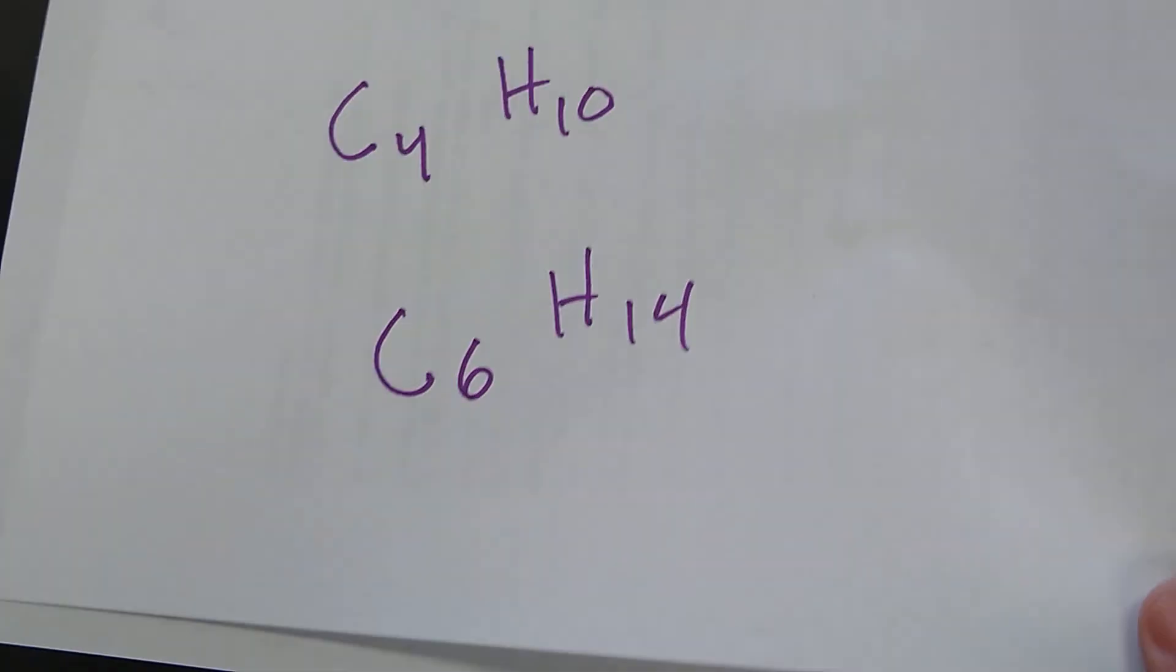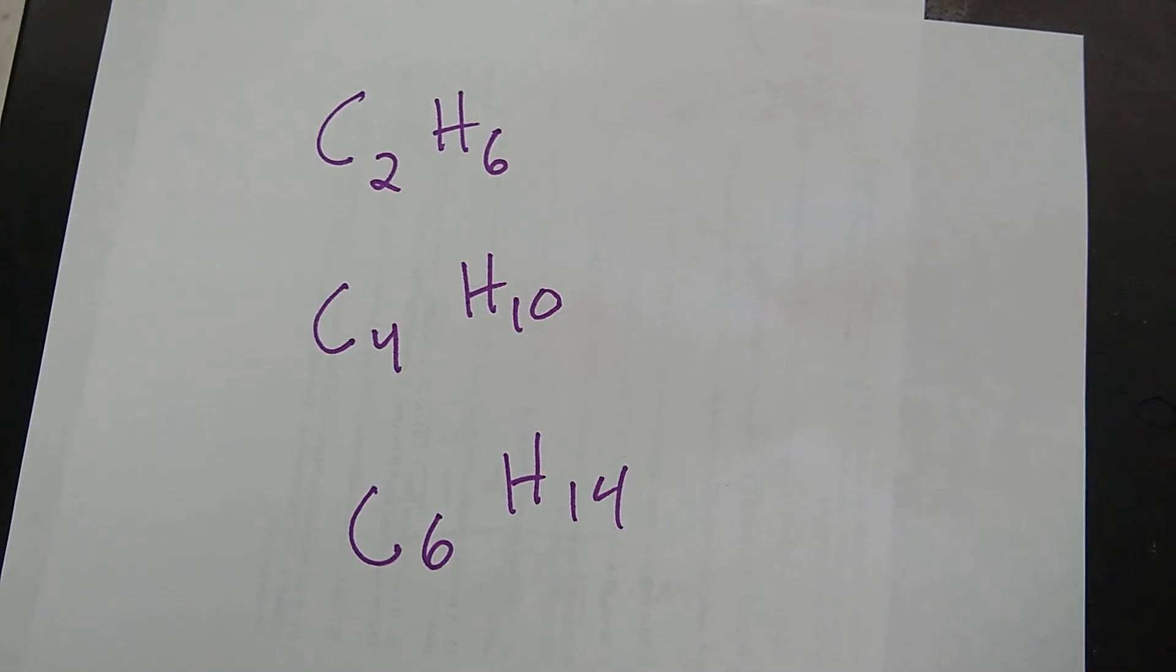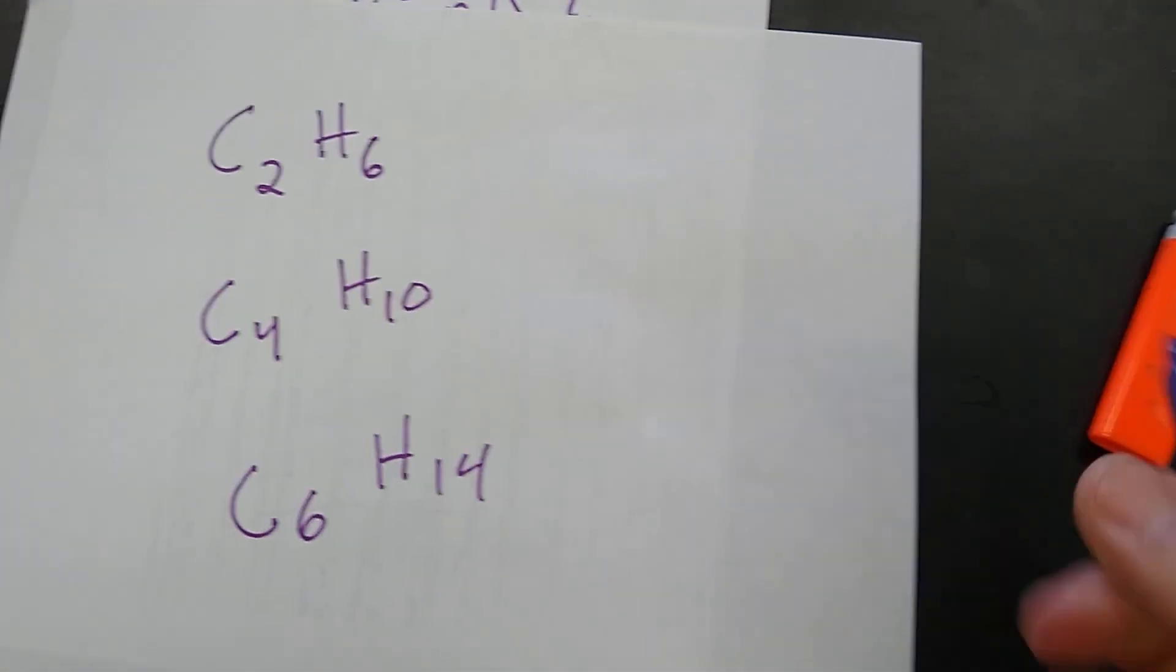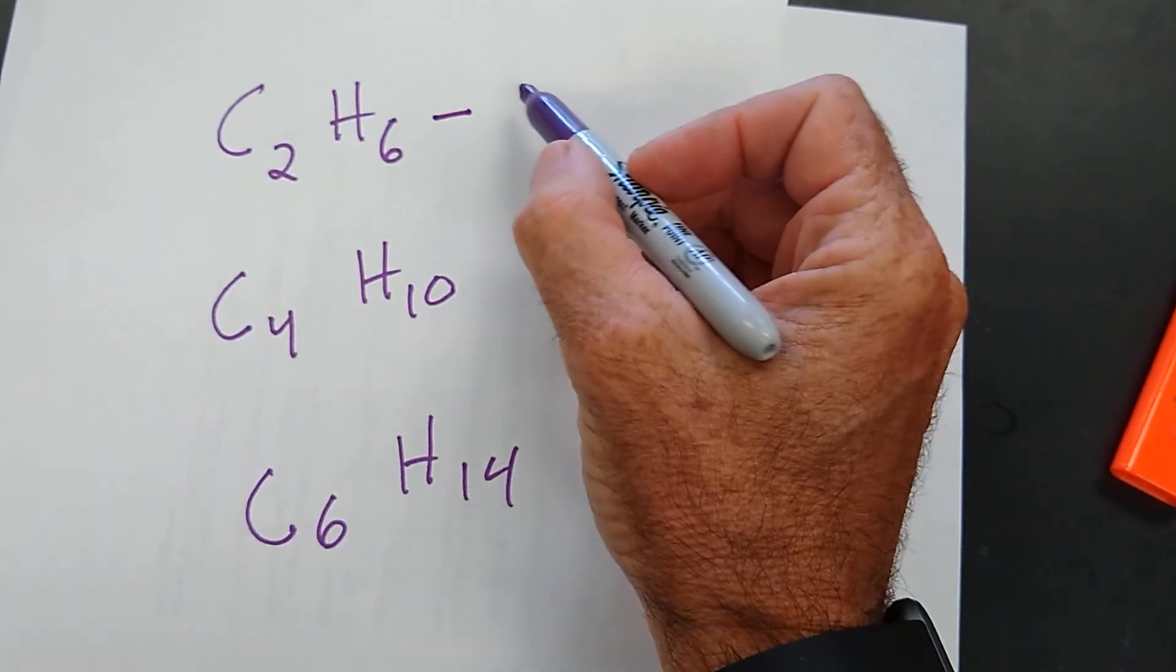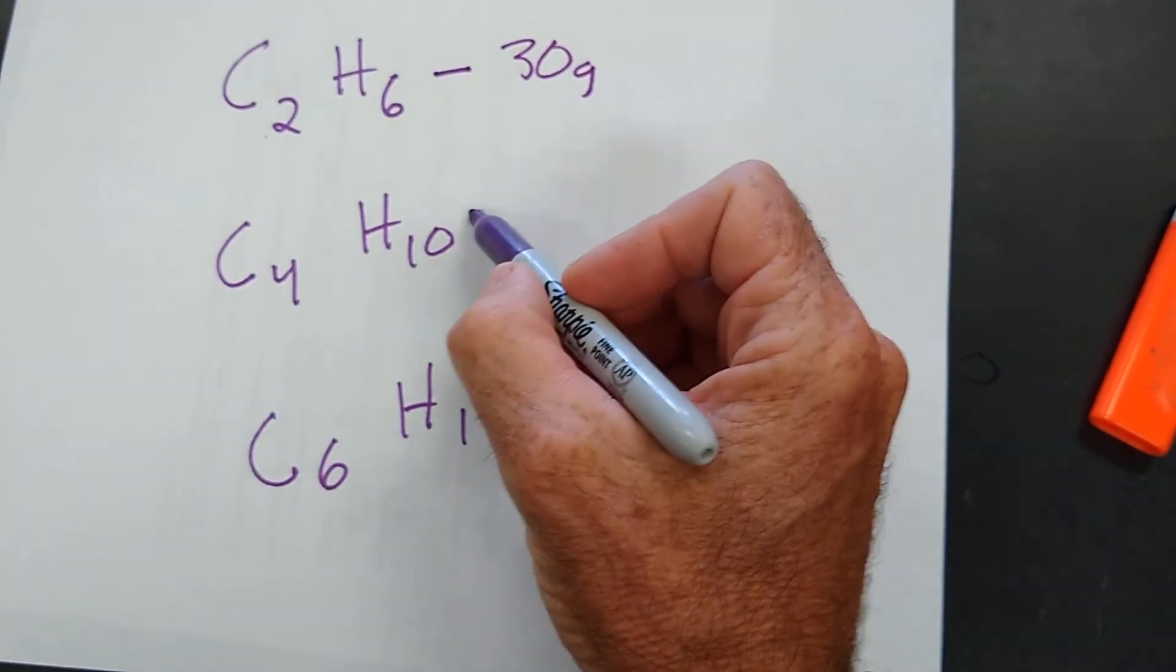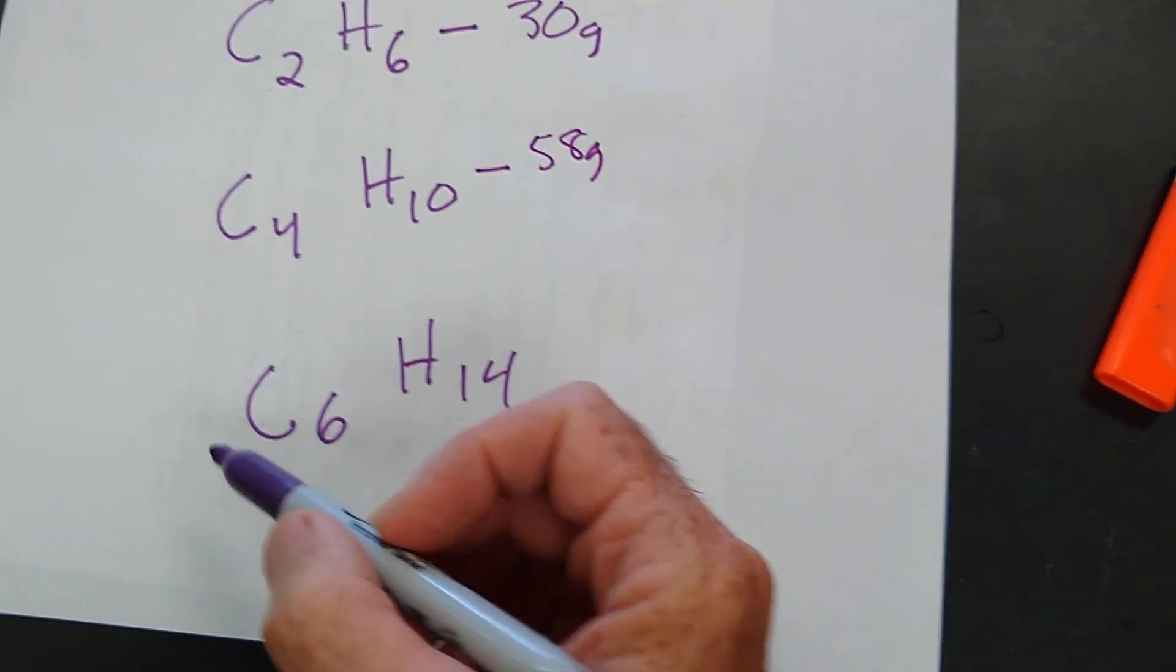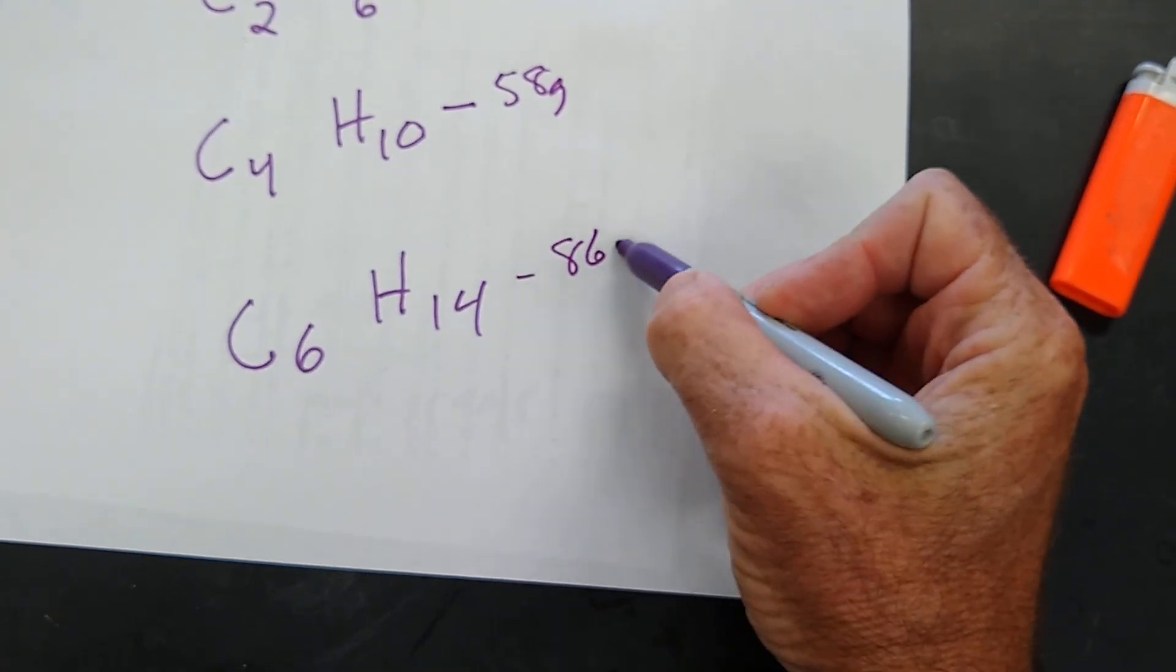So we could easily choose which one of these formulas is the formula for the gas in the lighter. Let's take a look. What is the weight of ethane, C2H6? That's 30 grams, 24 plus 6. What is the weight of butane? That looks like it's going to be 58 grams per mole. What is the weight of hexane? That looks like it's going to be 86 grams per mole.